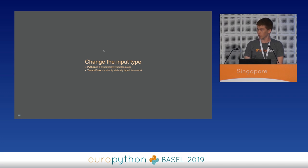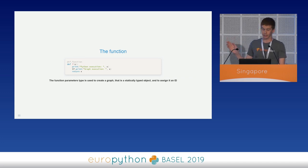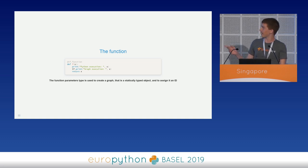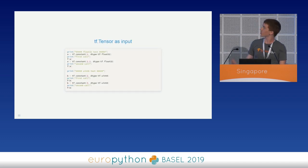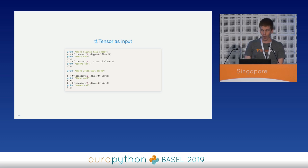We are going to define a function to test what happens when we change the input type. This is the function — it is a plain identity. The function accepts a Python variable x that can be literally everything. On line two, we have a print statement executed only once during function tracing. On line three, we have a tf.print that is executed every time the graph is evaluated. When the input is a tf.Tensor, we expect a graph to be built for every different tf.Tensor dtype — but only once. Then we reuse the same graph every time we call with the same dtype. On every second call, we don't expect to see the Python execution line, but only the output of the graph execution. As you can see, when the input is a tf.Tensor, everything works as we expect.